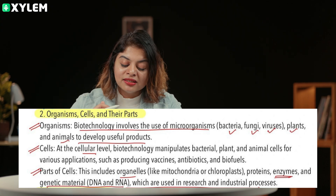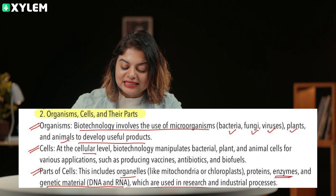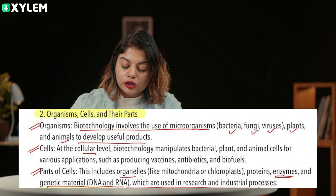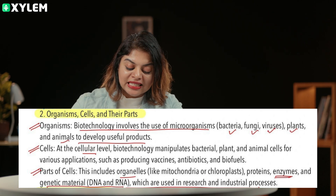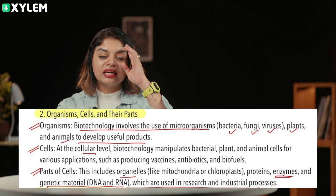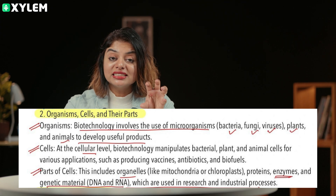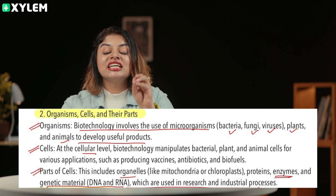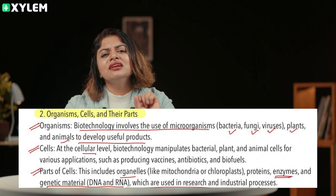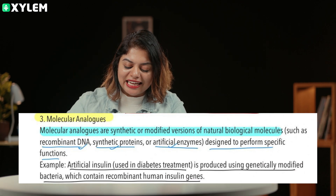Let's talk about parts of cells. It includes organelles like mitochondria, chloroplasts, proteins, enzymes and genetic material, which are used in research and industrial processes. So the hierarchy is: organism, cell within the cell, organelle within the organelle, and genetic material. It is a lot of detail. Now let's talk about molecular analogs.